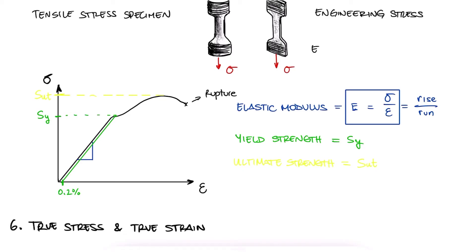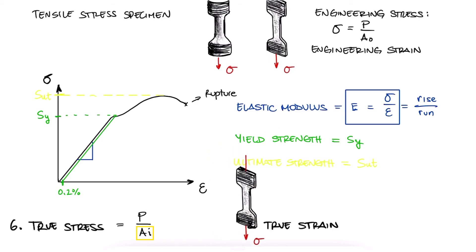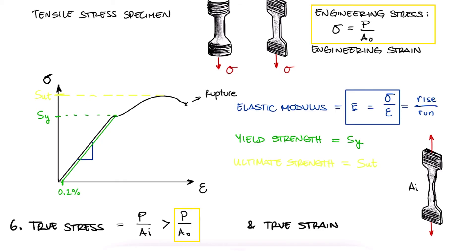True stress is defined as the load over the instantaneous area, or the area at any given point, as opposed to the engineering stress, where the area we use for the calculation is the initial area, or the area of the cross-section before any deformation takes place. Since, for example, during a tensile test of a common material, and by common, I'm referring to a material with a Poisson's ratio lower than one-half, more in Poisson's ratio later, the area will shrink, making the instantaneous area lower, and therefore, the true stress higher than the engineering stress.